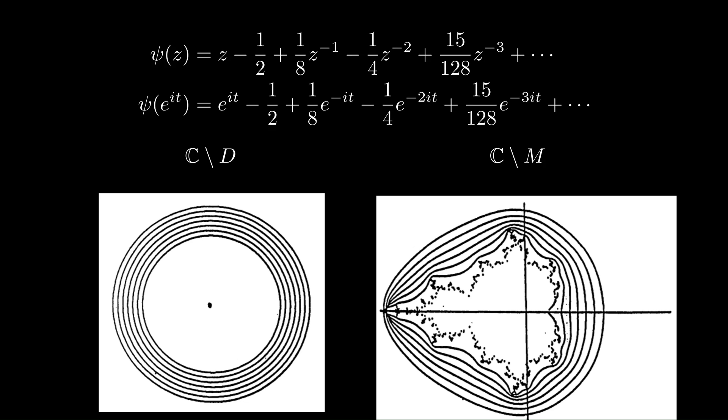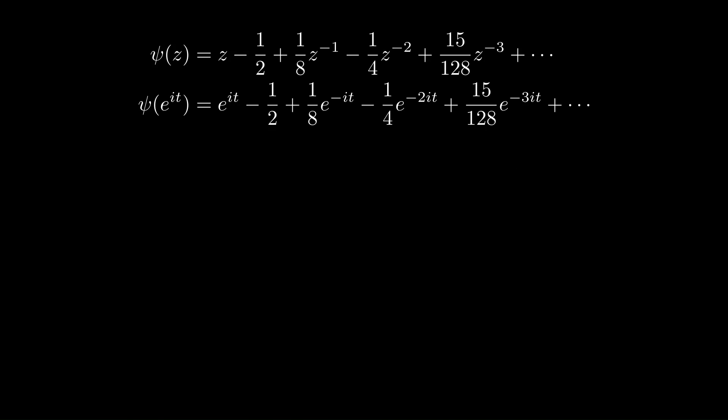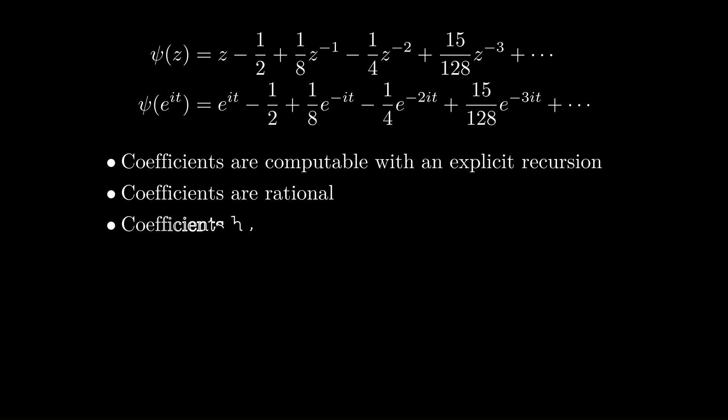Now this function ψ has coefficients that are very interesting. So for one thing, there's an explicit recursion to compute them, although it's quite complicated. The coefficients are all rational numbers, which is quite strange because most Fourier series, even for very simple regions, do not have rational coefficients. And furthermore, the denominators are all powers of two, and that comes out from the recursion, if you write it all out.